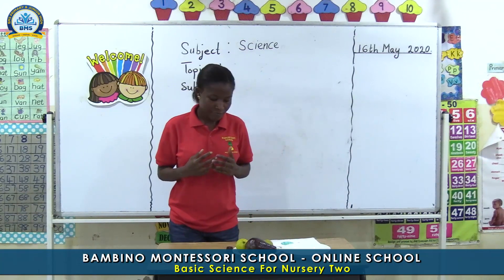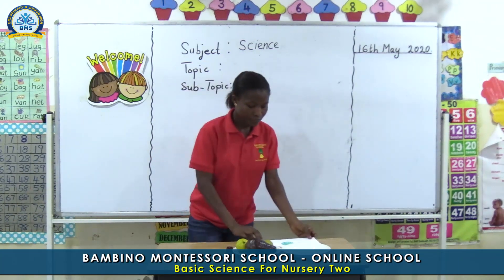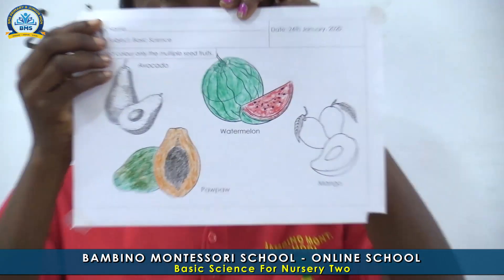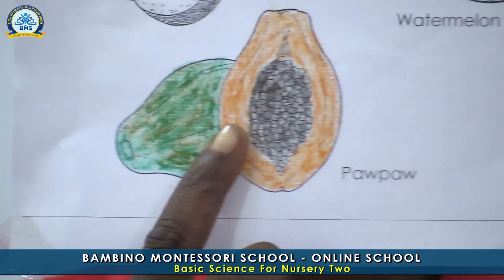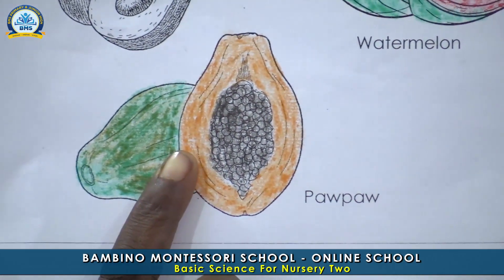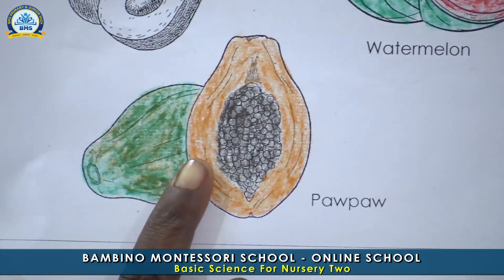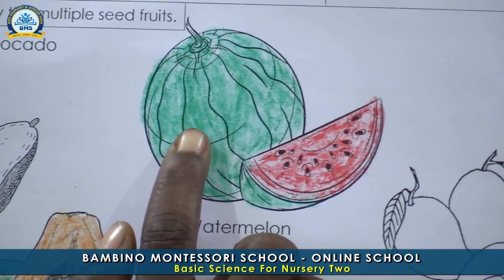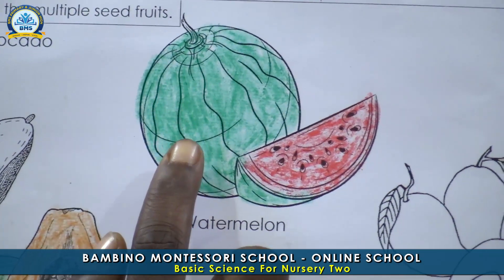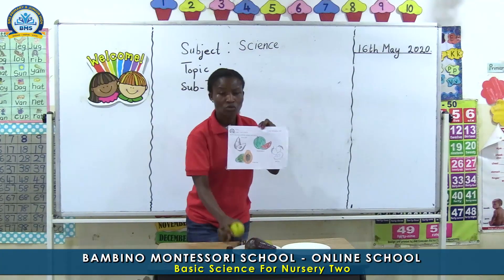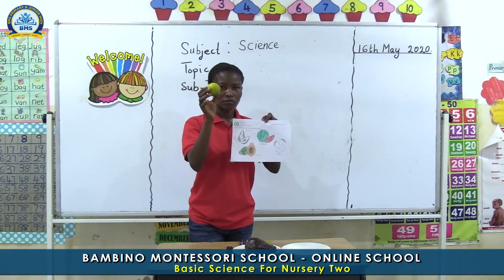Examples are: cocoa, papaya, and also watermelon, as well as orange.